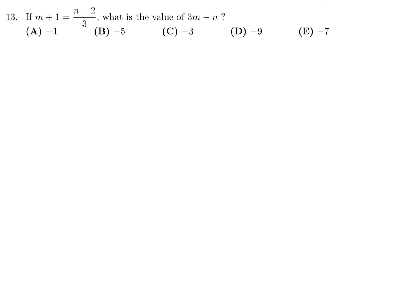If M plus 1 equals N minus 2 over 3, what is the value of 3M minus N? M plus 1 equals N minus 2 over 3. 3M plus 3 equals N minus 2. 3M minus N equals minus 2 minus 3, and that is negative 5. Number 13, the answer is B.